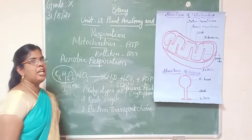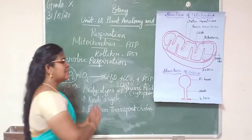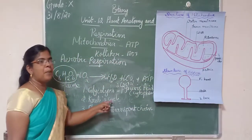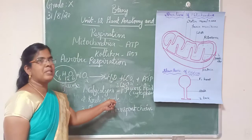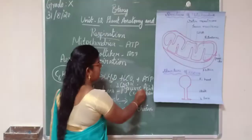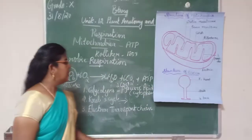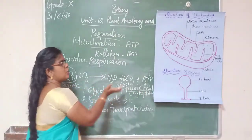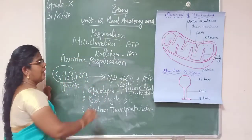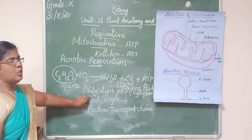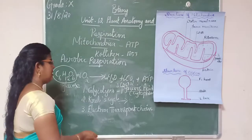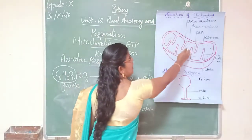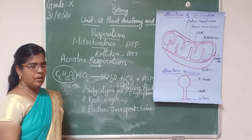The second stage in aerobic respiration is the Krebs cycle. The Krebs cycle takes place in the mitochondrial matrix. During the Krebs cycle, the pyruvic acid formed from glycolysis enters the mitochondrial matrix, where it is oxidized to produce carbon dioxide and water.